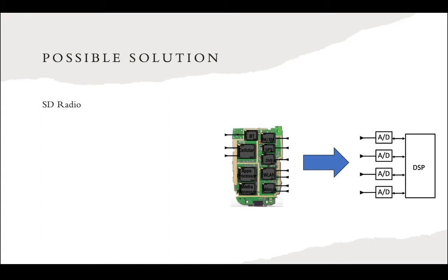One possible solution is Software Defined Radio (SDR), which means the radio can be treated as software. A digital signal processor can be programmed so that it can be used for any technology — for example, 3G, 4G, 5G, and others.